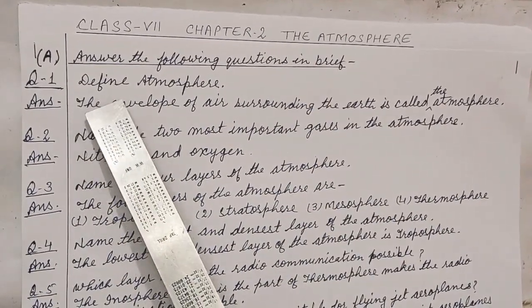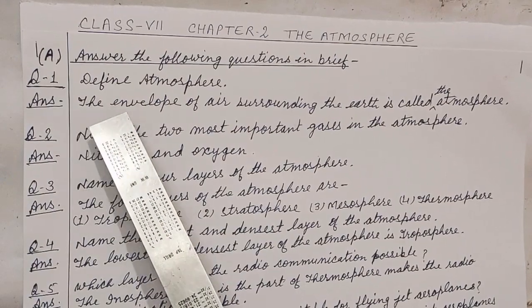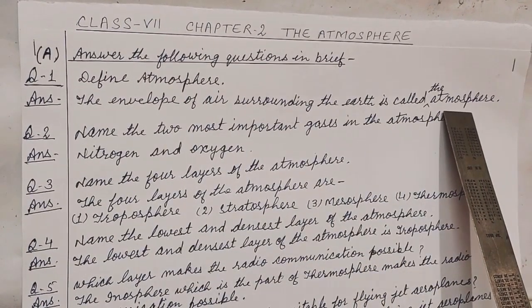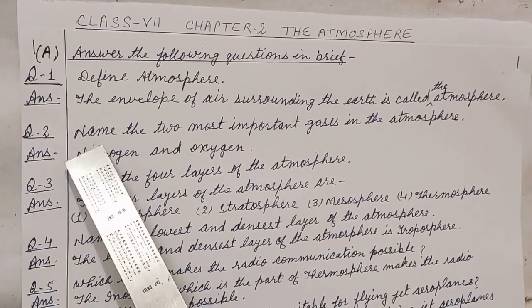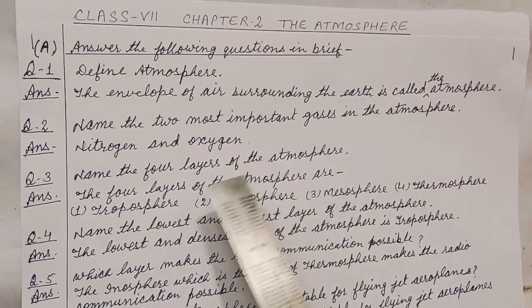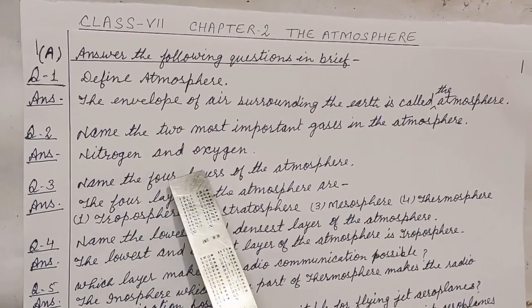Question number 1. Define atmosphere. Answer. The envelope of air surrounding the earth is called the atmosphere. Question number 2. Name the two most important gases in the atmosphere. Answer. Nitrogen and oxygen.